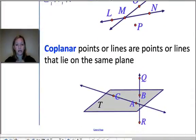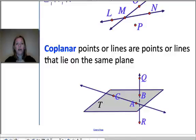Coplanar, in a similar way, are points that are on the same plane, points or lines that are on the same plane. So if we look at this example again, we could say, for example, that point C, point A, and point B are coplanar.